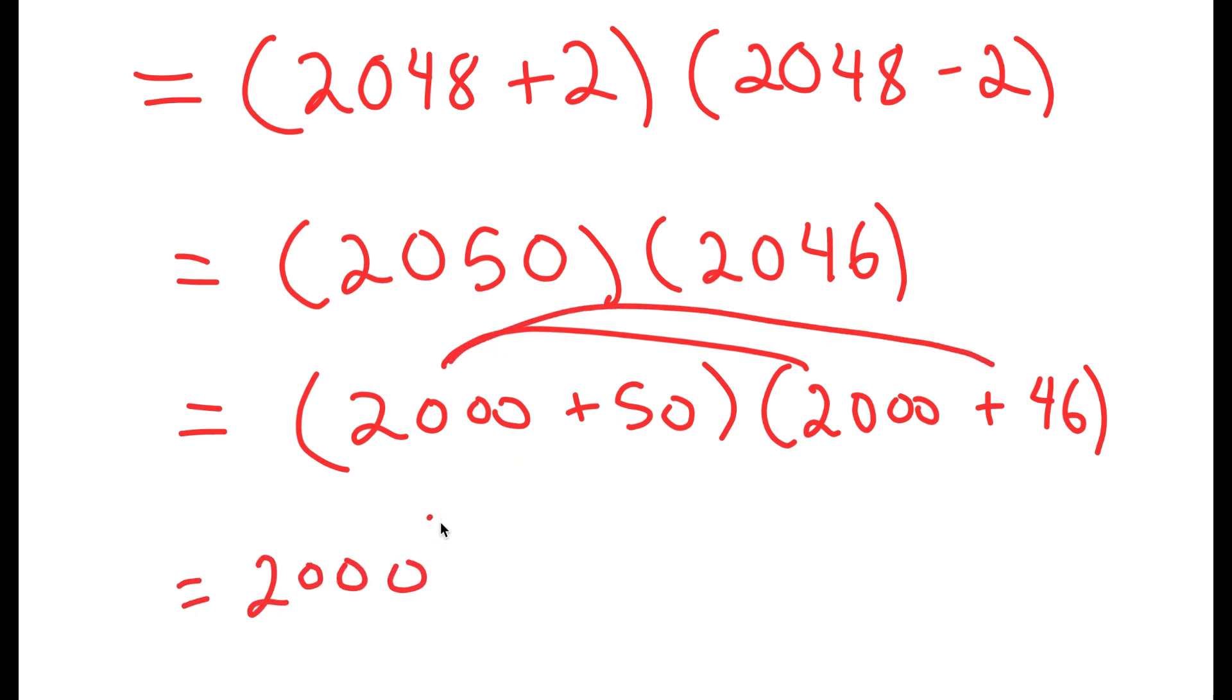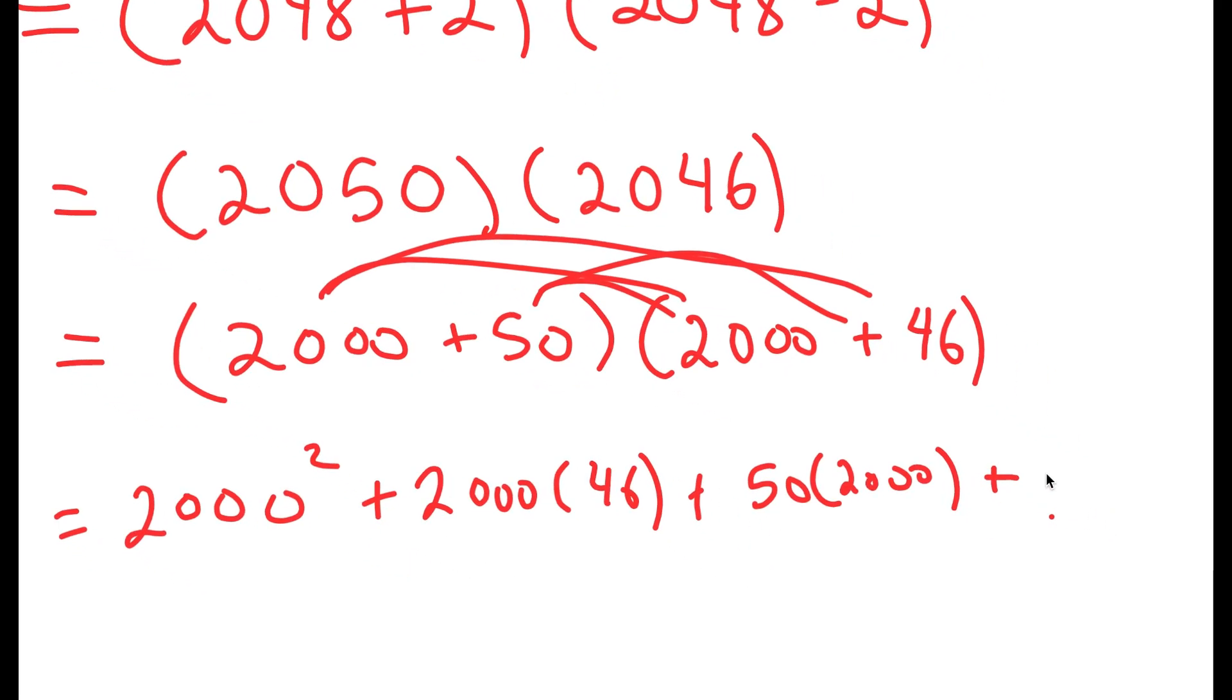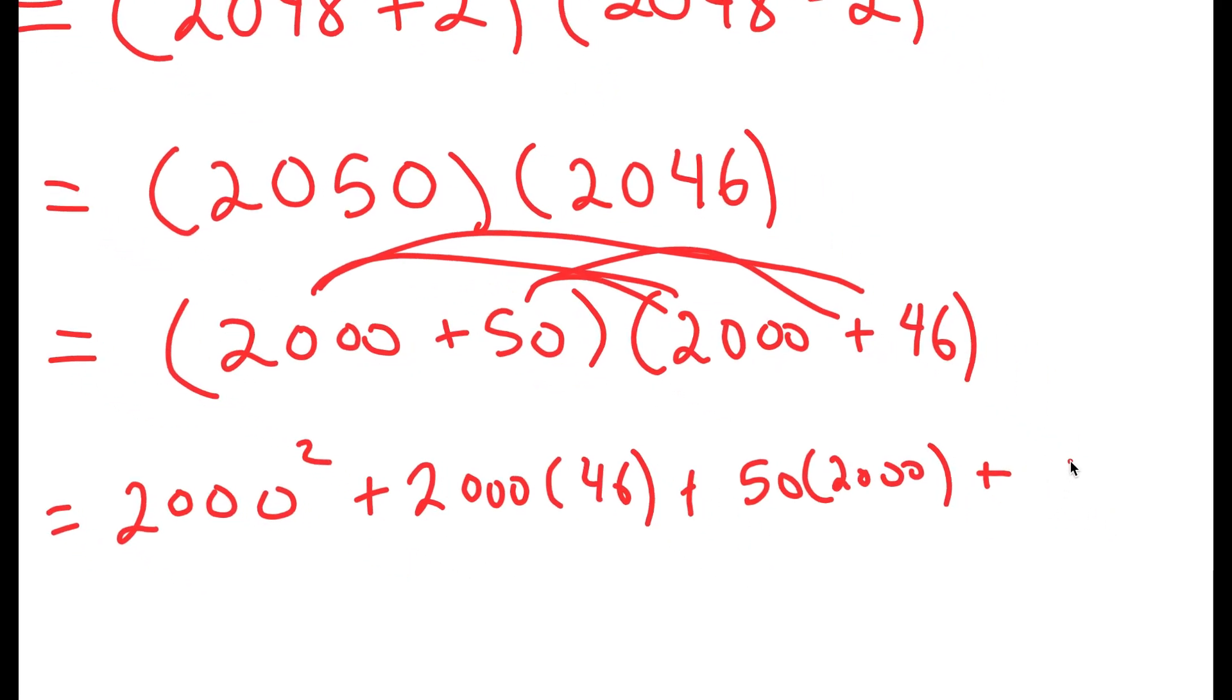So I get 2000 squared plus 2000 times 46 plus, now I can distribute the 50, 50 times 2000 plus 50 times 46.